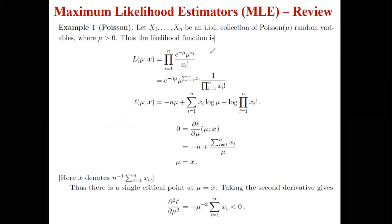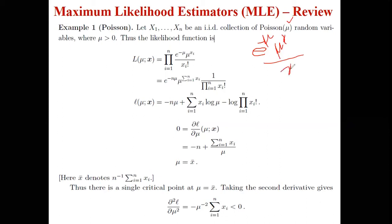The first example is with respect to Poisson distribution. If we have to calculate the Poisson distribution parameter using the maximum likelihood estimator, the Poisson parameter here is mu. The Poisson function with respect to mu is: e to the power minus mu, times mu to the power x, over x factorial. This is the probability function.